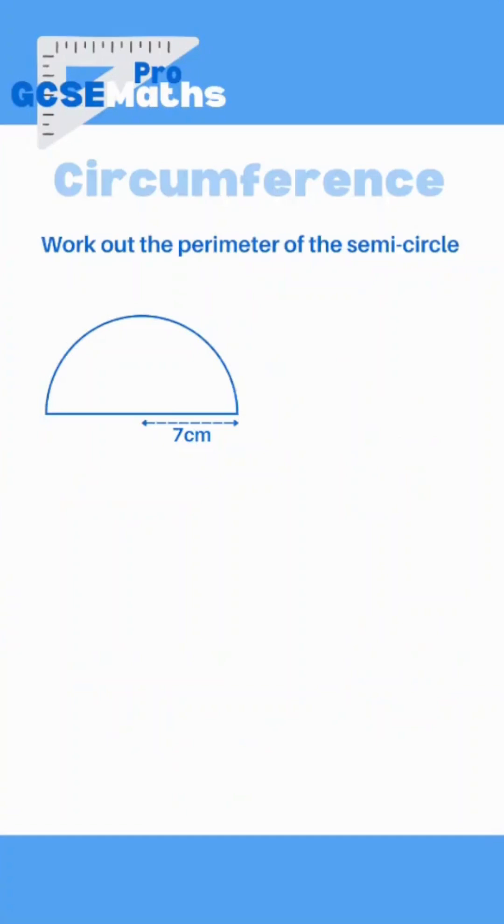So do you know how to work out the perimeter of a semicircle? The first thing we need to know is what the perimeter is. Perimeter is basically all of the sides, or all the way around the outside, added together.